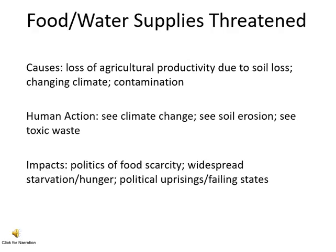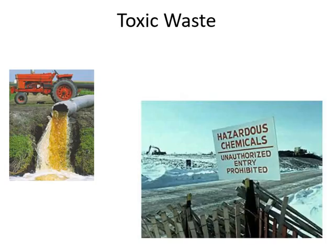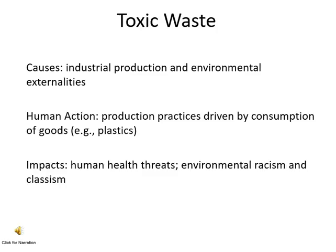When we've got desertification, soil erosion, and the loss of agricultural productivity, we see other problems arise from the threat to the food and water supply, such as widespread starvation and hunger. This is a big problem in the third world in particular. For industrial countries, there's a major problem with toxic waste — it can pollute the air, the land, and the sea. One of the major causes of toxic waste is industry itself and the desire to produce goods without concern for the environment. This is often driven by human consumption of those goods, but also companies who choose to produce items in a particular way. The impacts of toxic waste are primarily on human health, and we have also seen phenomena such as environmental racism result from the disproportionate location of toxic waste.